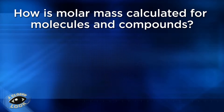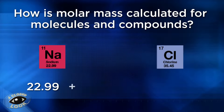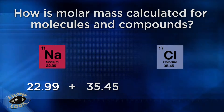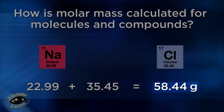When we are finding the molar mass from molecules or compounds rather than one element, we simply add the molar masses of all of the elements that make up that compound or molecule. For example, you find the molar mass of sodium chloride, NaCl, by taking 22.99 — the molar mass of sodium — and adding that to 35.45, the molar mass of chlorine. When you add those numbers, you find that the molar mass of sodium chloride is 58.44 grams per mole.